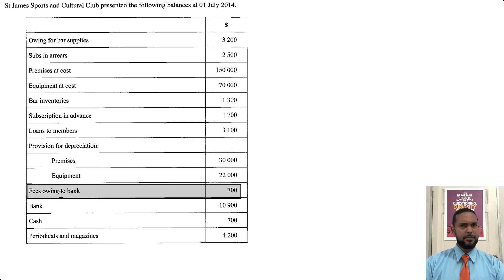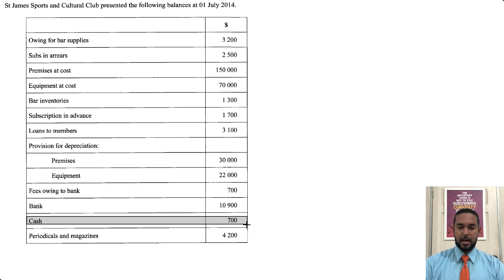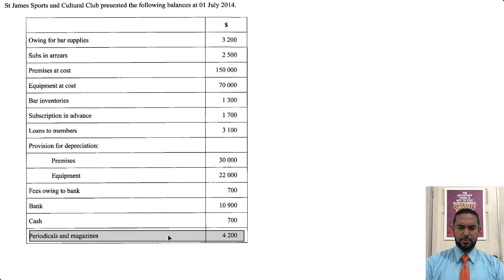Fees owing to bank — if you're owing it to the bank, that's a liability. We have bank and cash, both assets. Periodicals and magazines — that's probably an asset as well.